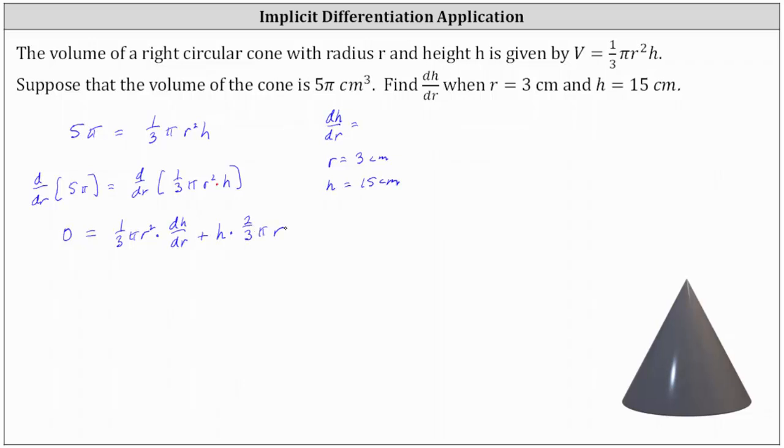And now we need to solve this equation for dh/dr. So let's begin by subtracting two-thirds π r h on both sides of the equation, which gives us negative two-thirds π r h equals one-third π r squared times dh/dr.